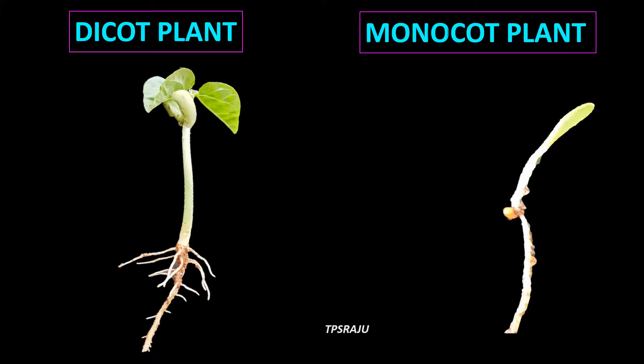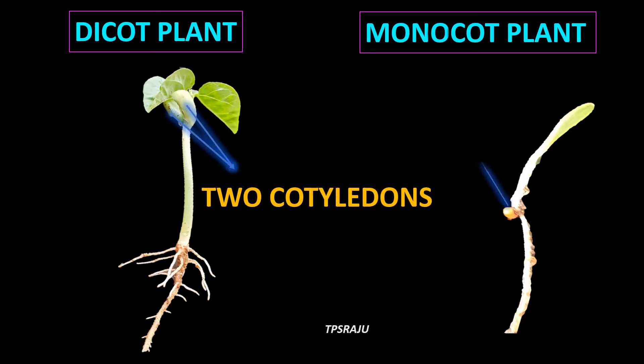The seed leaf within the seed is called a Cotyledon. Upon germination, these Cotyledons emerge as the first leaves of a seedling. Plants are classified as monocots or dicots based on the number of Cotyledons. Bean seed has 2 Cotyledons, so it is a dicot plant. Finger millet has only 1 Cotyledon, so it is a monocot plant.